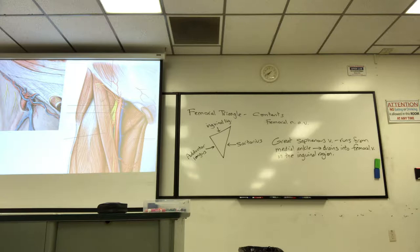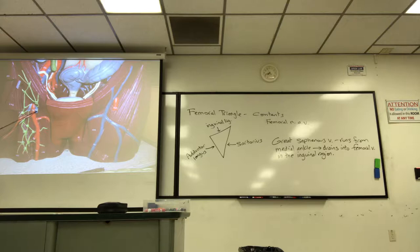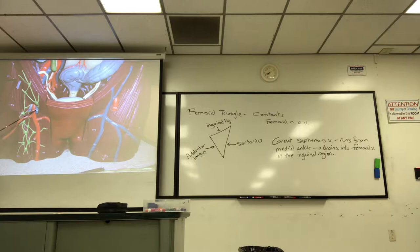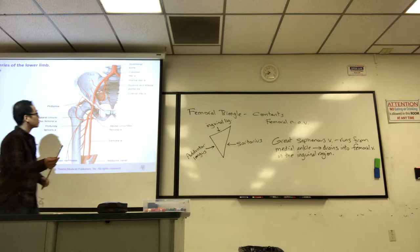The femoral vein is within the femoral triangle, right next to the artery and the nerve. On the model, the green one is actually lymphatics, and the nerve is gray. It's always from lateral to medial: nerve, artery, and vein. Now there are some other arteries I want you to know, and this figure traces out the arteries.